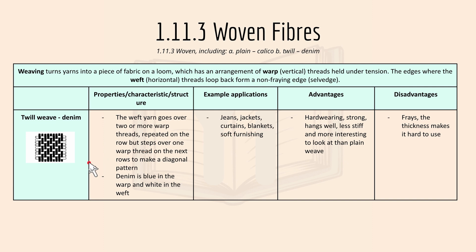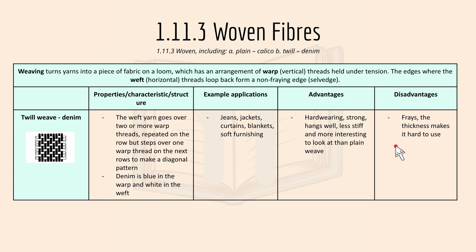Next is twill weave — denim. The weft yarn goes over two or more warp threads, repeated on each row but stepping over one warp thread onto the next row, making a diagonal pattern. Denim is blue in the warp and white in the weft. Examples include jeans, jackets, and curtains. Advantages: hard-wearing, strong, and hangs well. Disadvantages: denim frays and its thickness makes it hard to use in some applications.